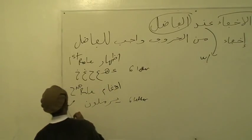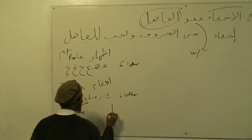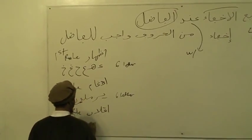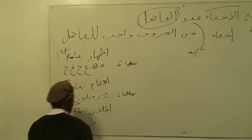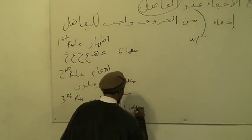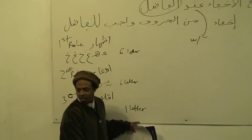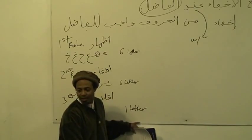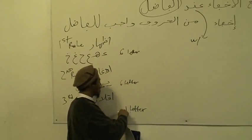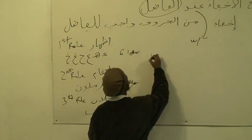What's the third rule? Iqlab. And how many letters? With thalithu al-iqlabu inda al-ba'i — Ba. That's one letter. So you have six, six, one — that's thirteen letters.